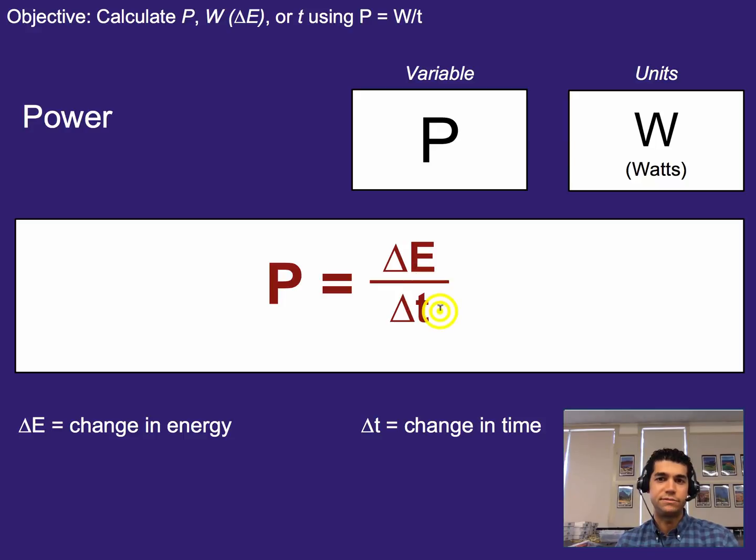So power is energy divided by time, or change in energy over time is the easy way to think about it, and that's applicable in a lot of different scenarios. But that's harder to apply to circuits, which is really what we're going to get to in this one. But before we get there, know that power is represented with a variable P, and the units are watts, represented with a capital W.